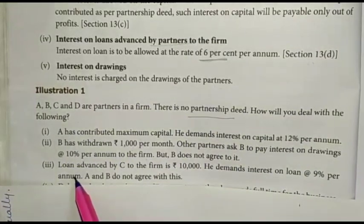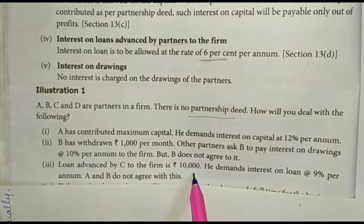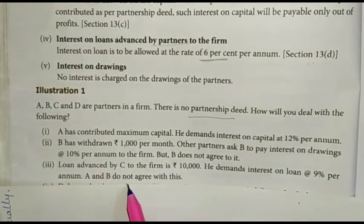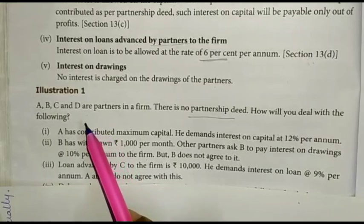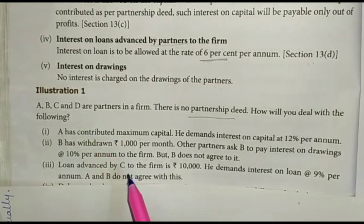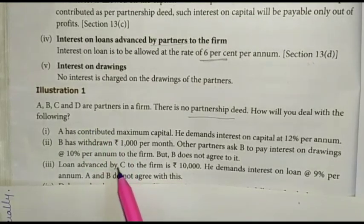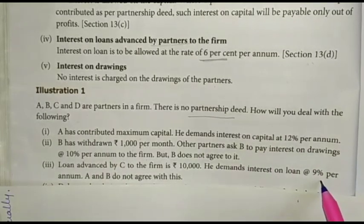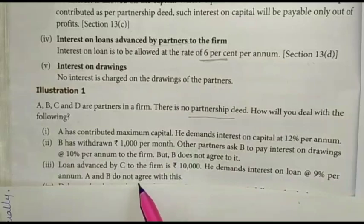Third one: loan advanced by C to the firm is Rs. 10,000. He demands interest on loan at 9% per annum. A and B do not agree with this.